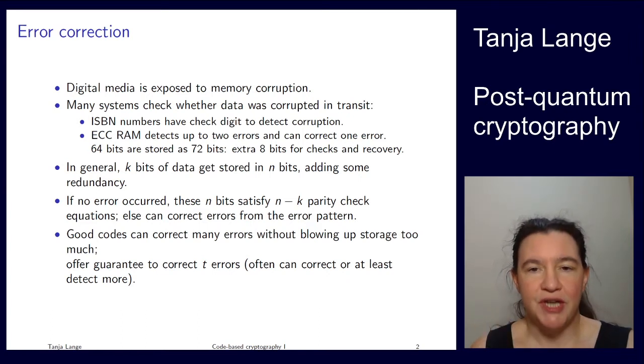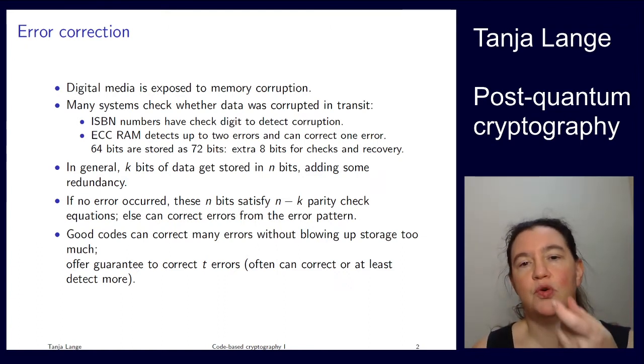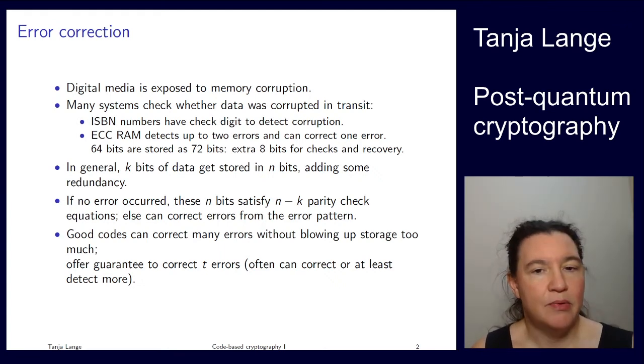When you check whether an error occurred, you check that these redundant bits are compatible, are consistent with the rest of the data. For that we have equations that check whether they work. Since the initial codes were just looking at odd and even, at the parity, these checks are called parity check equations. If nothing happened, you get zeros for all those parity checks, else you can detect or even correct some errors. If you have a good code you can correct many errors, and blowing up storage means you don't want to add too much redundancy, but some is necessary.